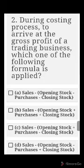Moving to number two: during the costing process to arrive at the gross profit of a trading business, which formula is applied? A) Sales minus opening stock minus purchases minus closing stock. B) Sales minus opening stock plus purchases plus closing stock. C) Sales minus opening stock plus purchases minus closing stock. D) Sales minus opening stock minus purchases plus closing stock.